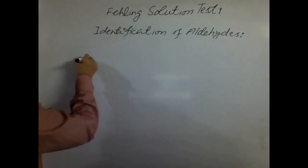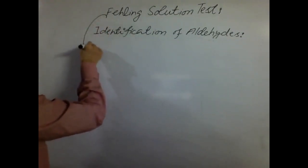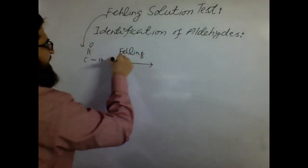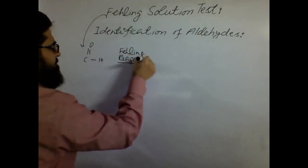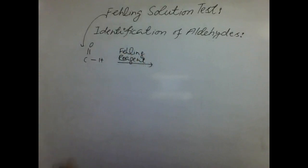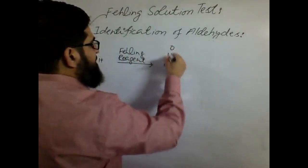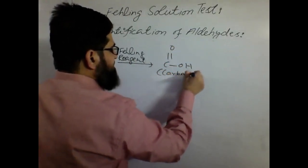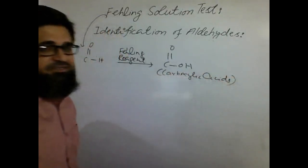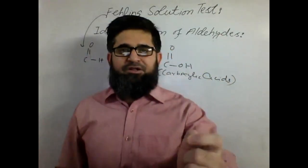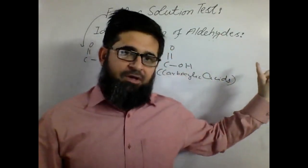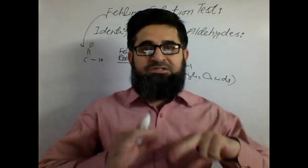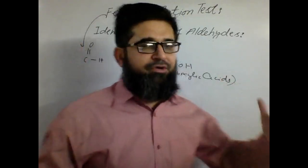Just like Tollens, in Fehling's test, when the aldehydes react with Fehling's reagent, the aldehydes get oxidized again and produce carboxylic acids again. In Tollens test, aldehydes undergo oxidation and produce corresponding carboxylic acids. In the same way, Fehling's solution also oxidizes the aldehydes into corresponding carboxylic acids.